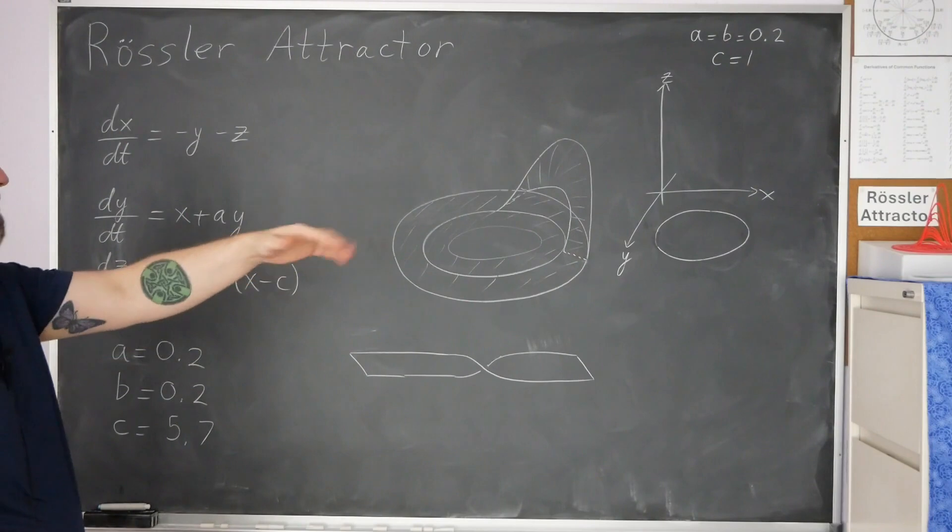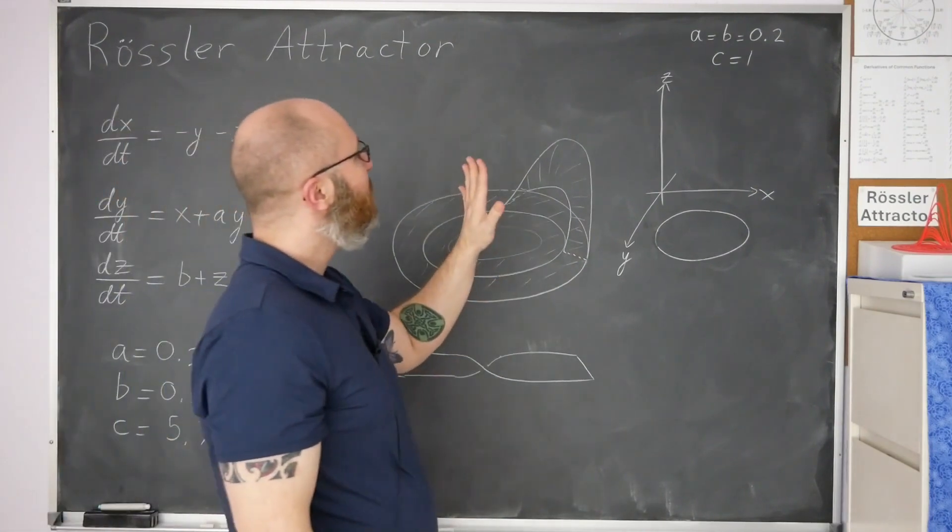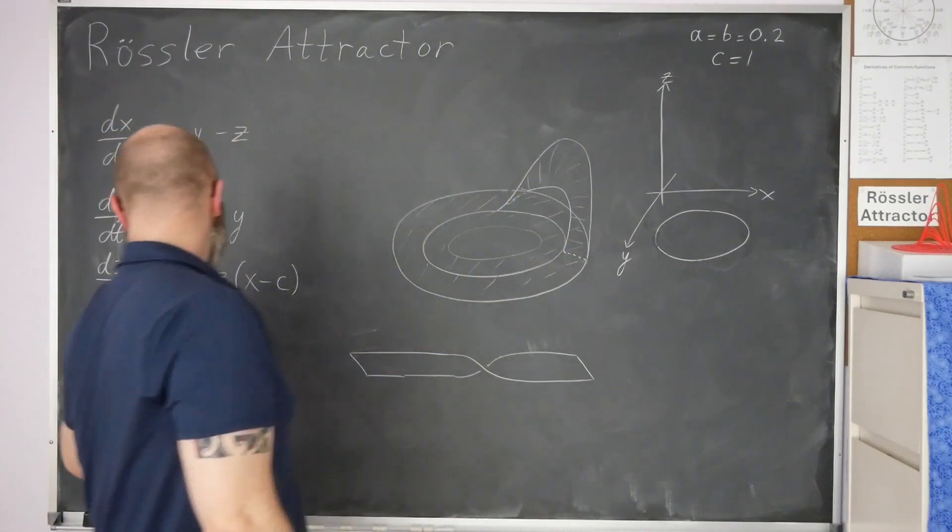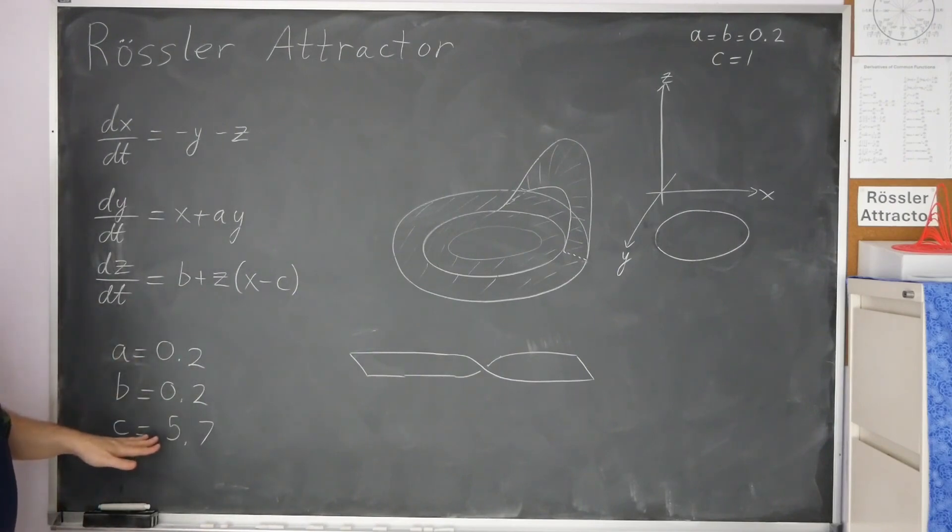So that's a verbal description. And then the other thing is, these parameter values, these aren't the only ones that actually cause strange attractors. There's a bunch. It's just this is one of the parameter sets that have been well studied.